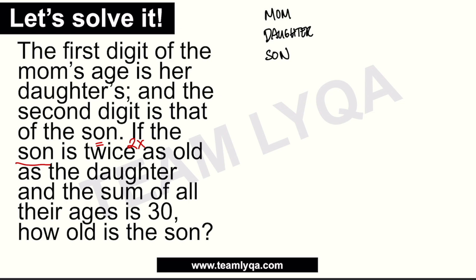First question: who is older? If the son's age is two times the daughter's, the son is older. This part confuses many people — determining who to multiply by two. Since the son is twice as old as the daughter, we let the daughter's age be x, and the son's age is 2x.